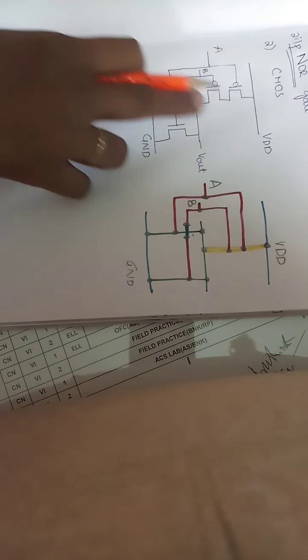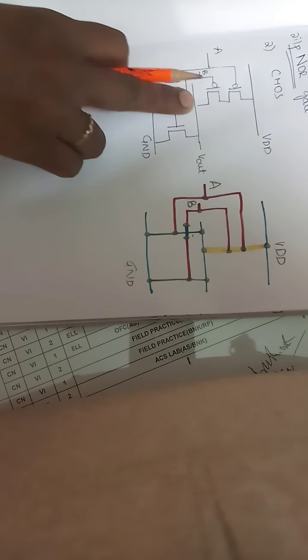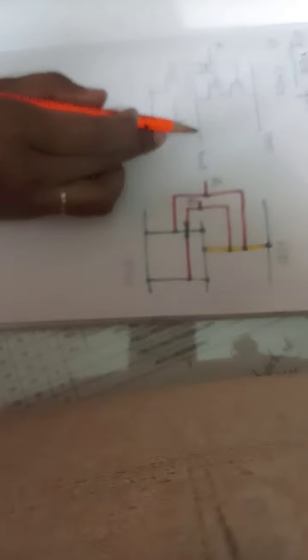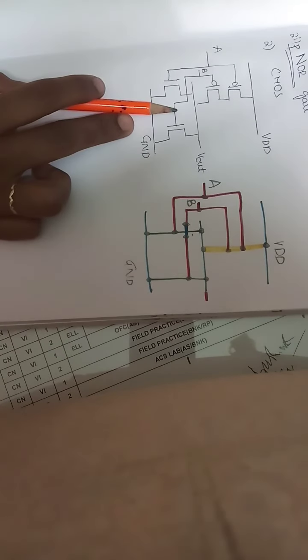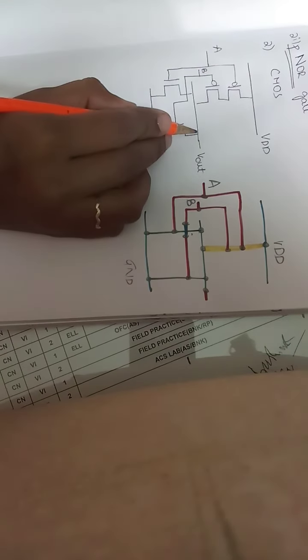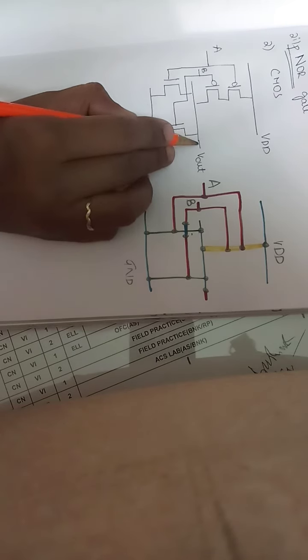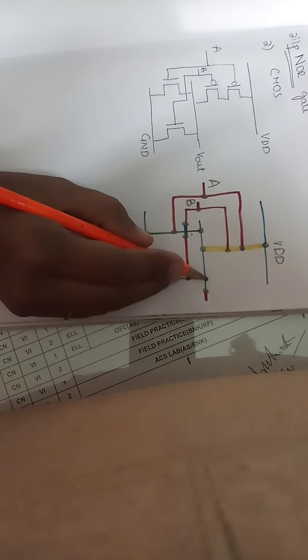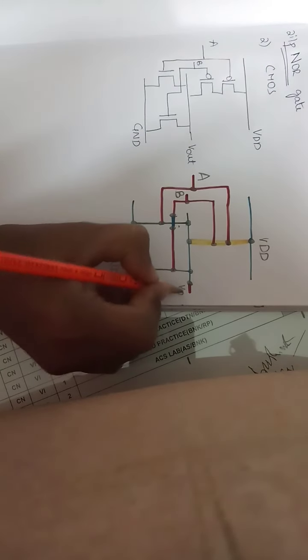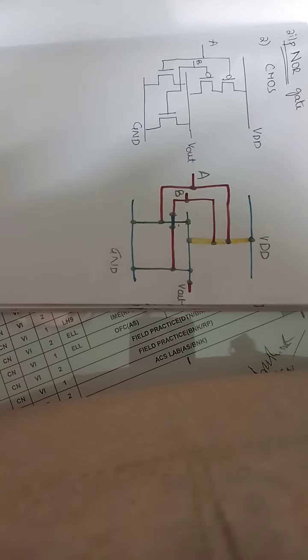The output is taken in between these two — some metal is used in between. Take polysilicon here wherever the connection is given in the circuit diagram; in the same way represent it in the stick diagram. The output is taken in between the two metals, and for that you take the contact with polysilicon. This completes the circuit diagram and stick diagram for the two-input NOR gate CMOS implementation.